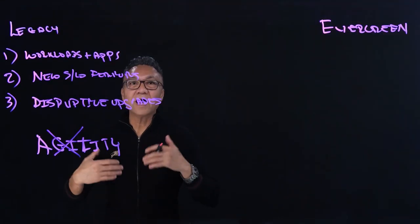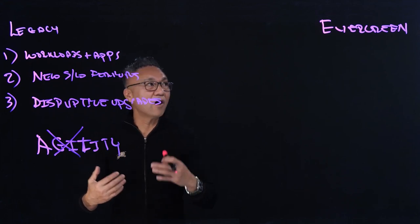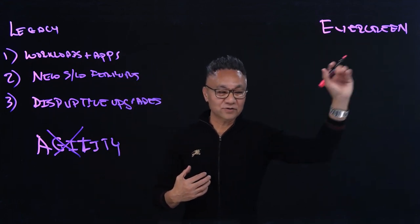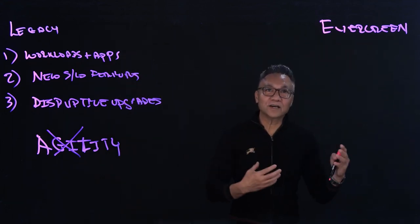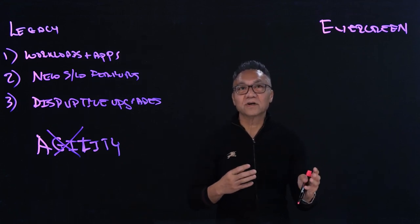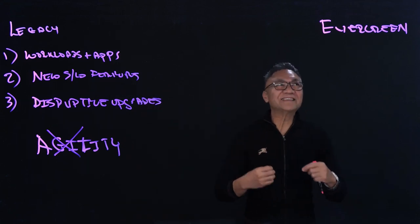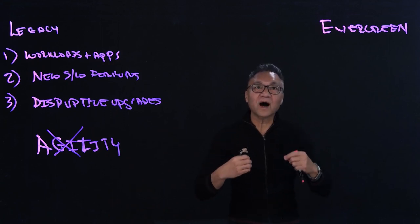So, how do we break this vicious cycle? It all starts with our evergreen architecture. With our evergreen architecture, we solve all the challenges of legacy storage. And we do this by designing our storage to be upgraded.